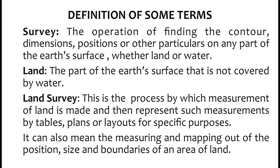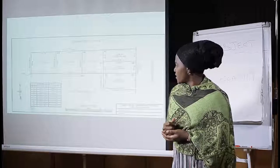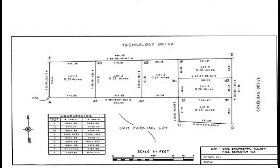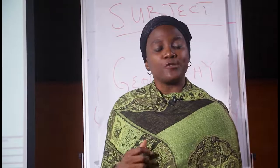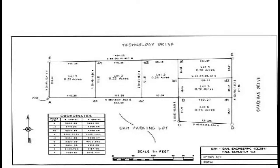It can also mean the measuring and mapping out of the position, size, and boundaries of an area of land. If you look clearly on the board, especially for those of us watching on TV, you'll see a diagram. This diagram is trying to show us what a plan looks like. In the plan, you'll see a table with grids. When we said that such measurements are represented in tables or in plans, that is a plan that is drawn on the board, and the L shape we have on the board is a plan, while the table beneath it is an example of one of the tables used in land surveying.